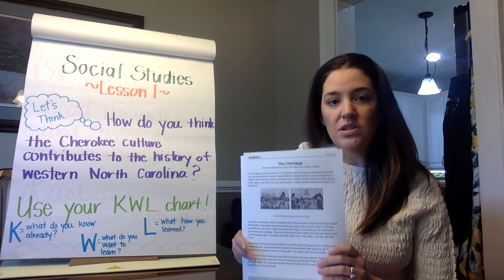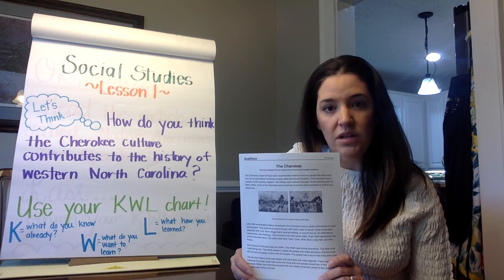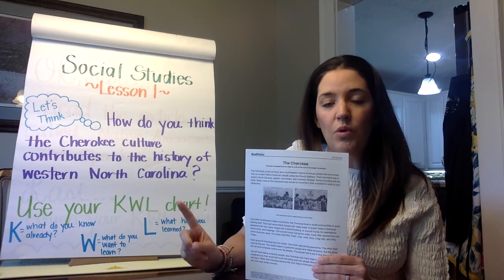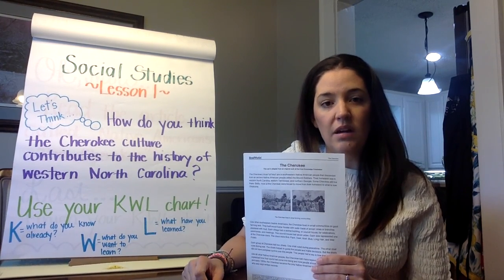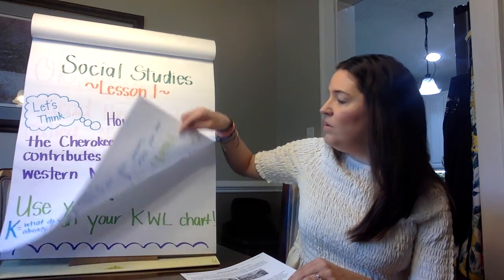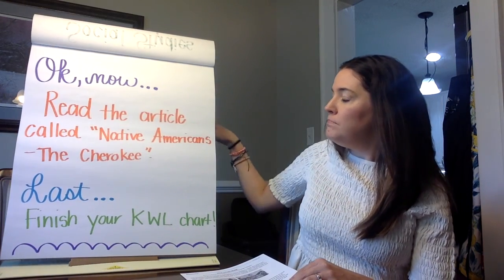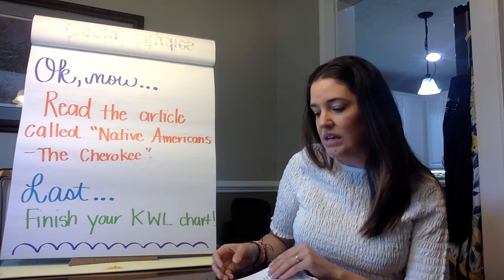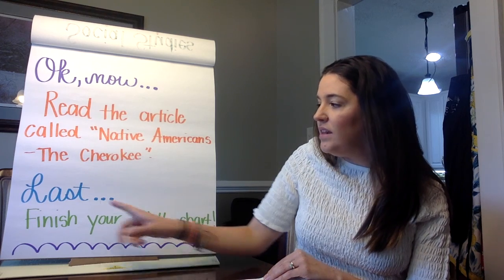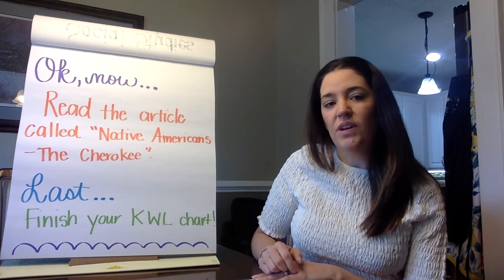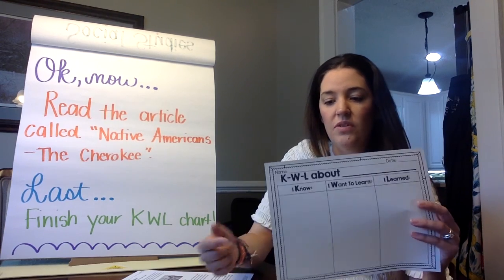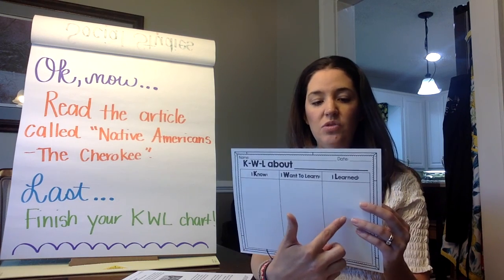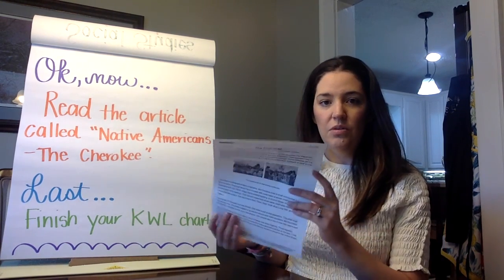You'll read that and you can do that with some help — you don't have to read it alone. Sometimes Ms. Harris will read an article to you and then have you read it one more time to yourself. You can do that at home. Now you're ready. You're going to read the article and its title is Native Americans: the Cherokee. The last thing you're going to do for this lesson is to finish filling out that KWL chart. You should have already done the K and the W before reading, and then last, you'll do what you learned after you read.